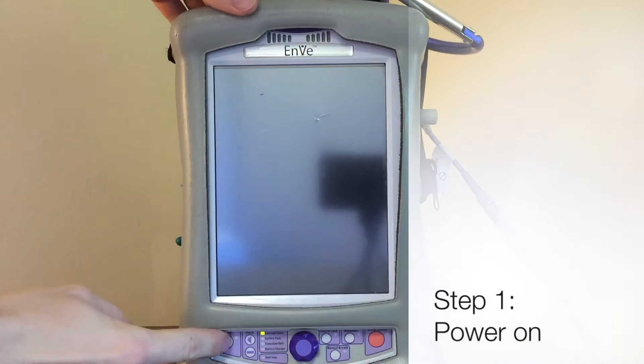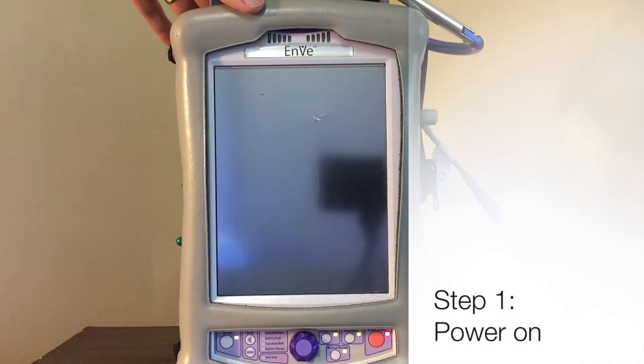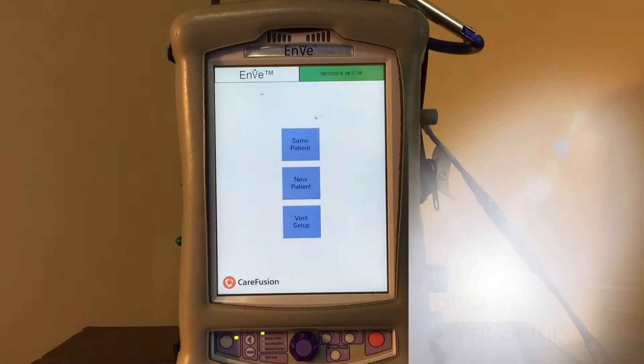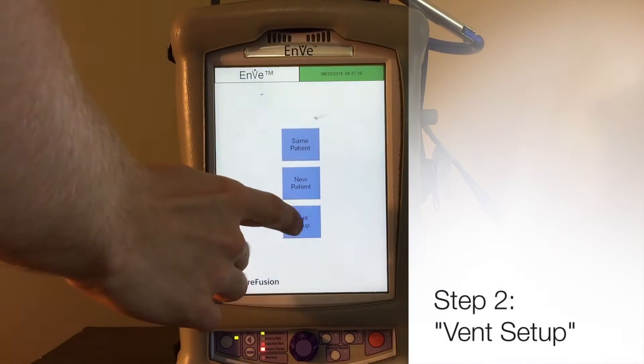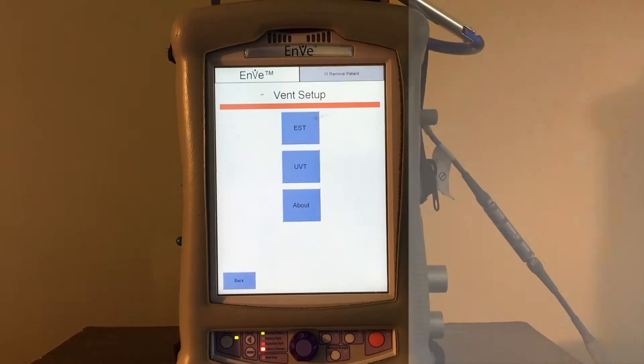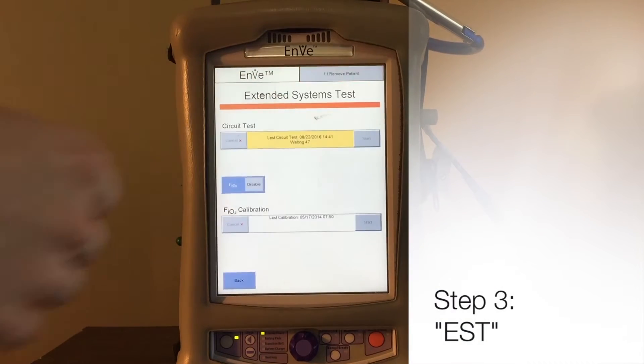The very first step is hit the power button on the bottom left-hand side. Once it powers up, you're going to be shown a few options and you're going to go all the way to the bottom and click Vent Setup. You'll be taken to another screen and at the very top you'll see there it says EST. Go ahead and click that.